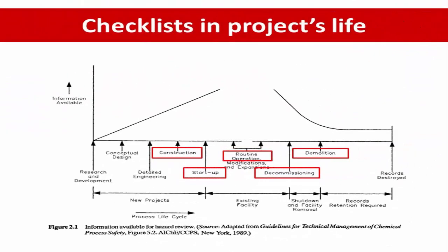The Hazard Checklist uses a list of specific items to identify known types of hazards and potential accident situations associated with the process equipment and operations.